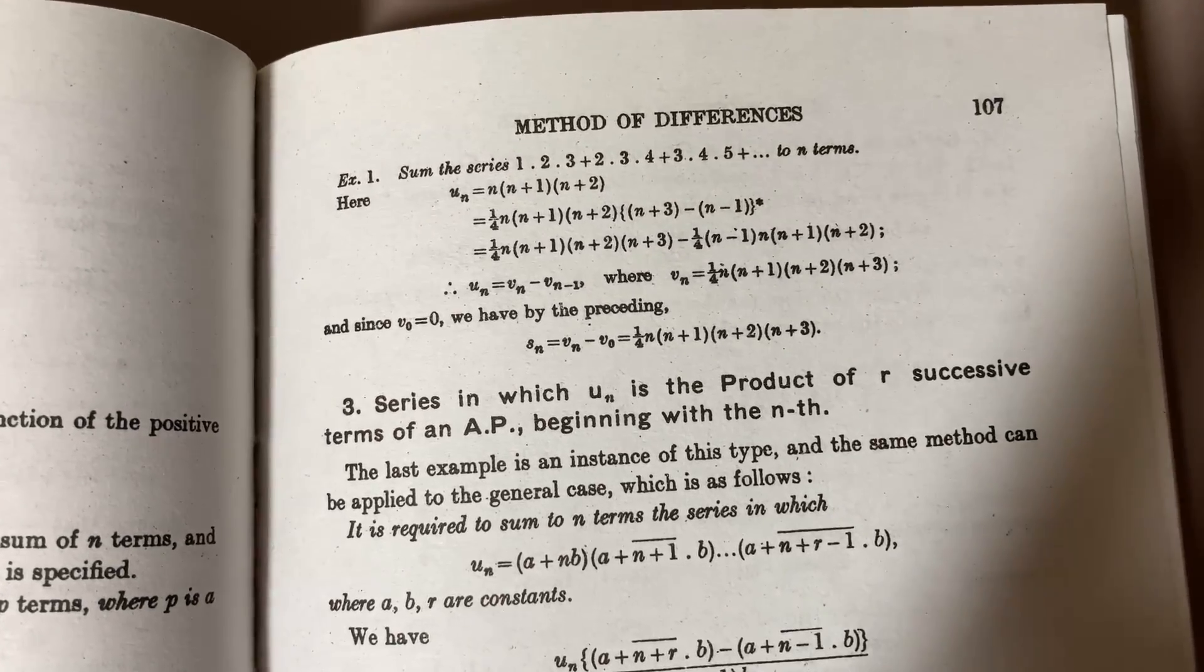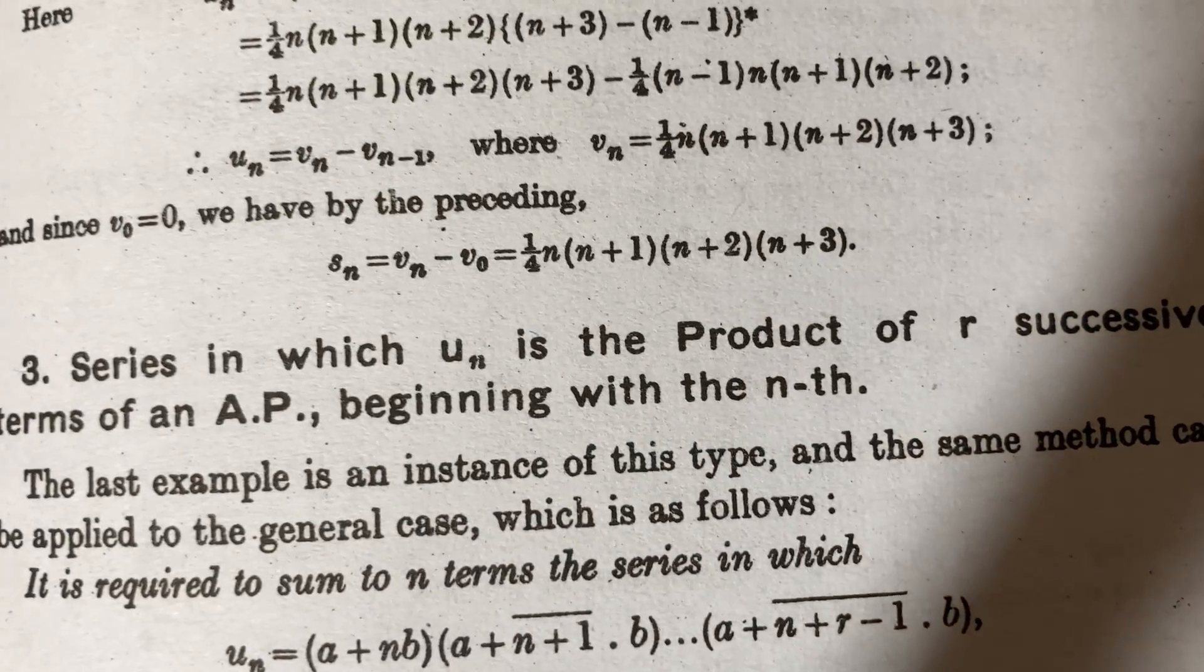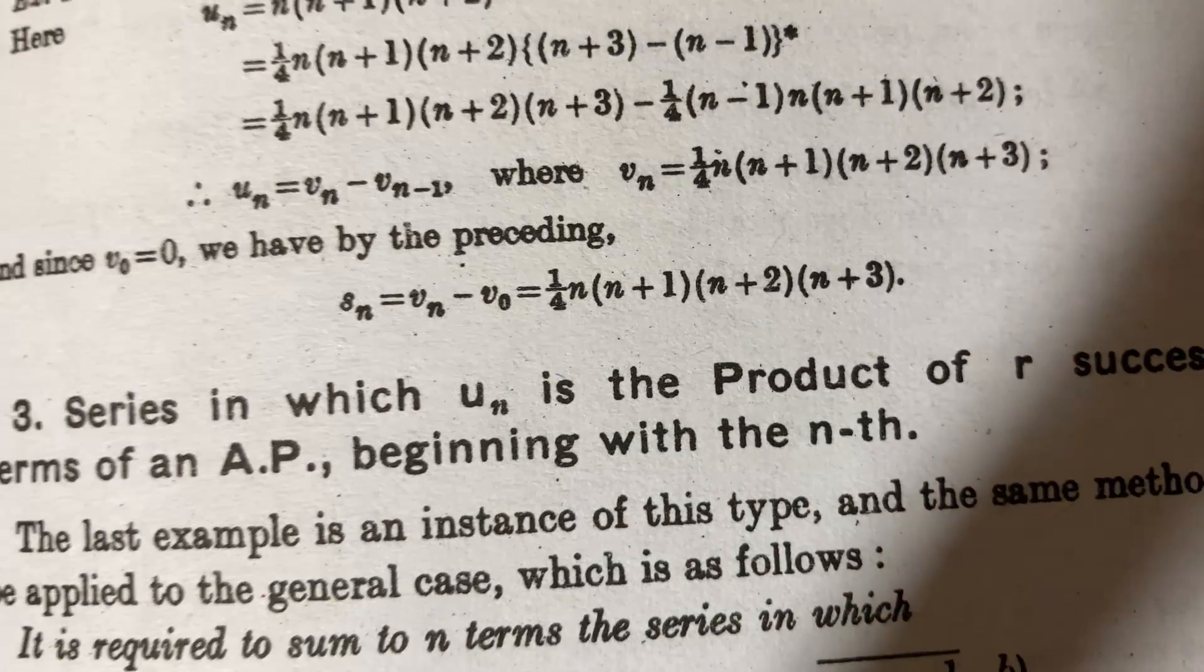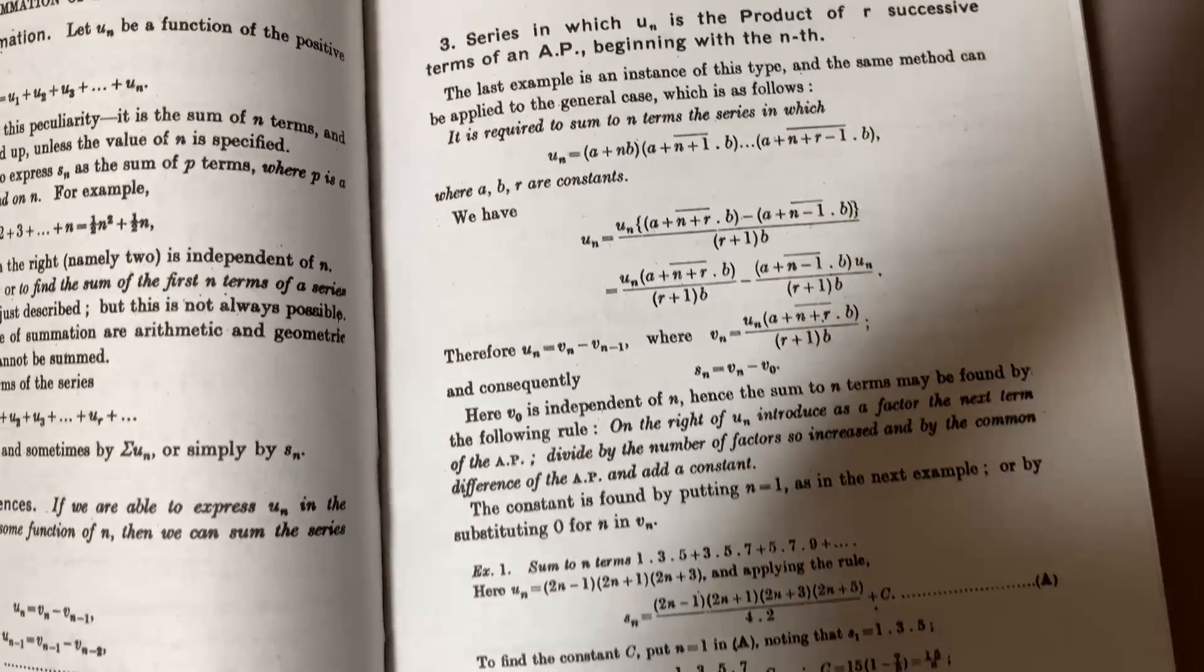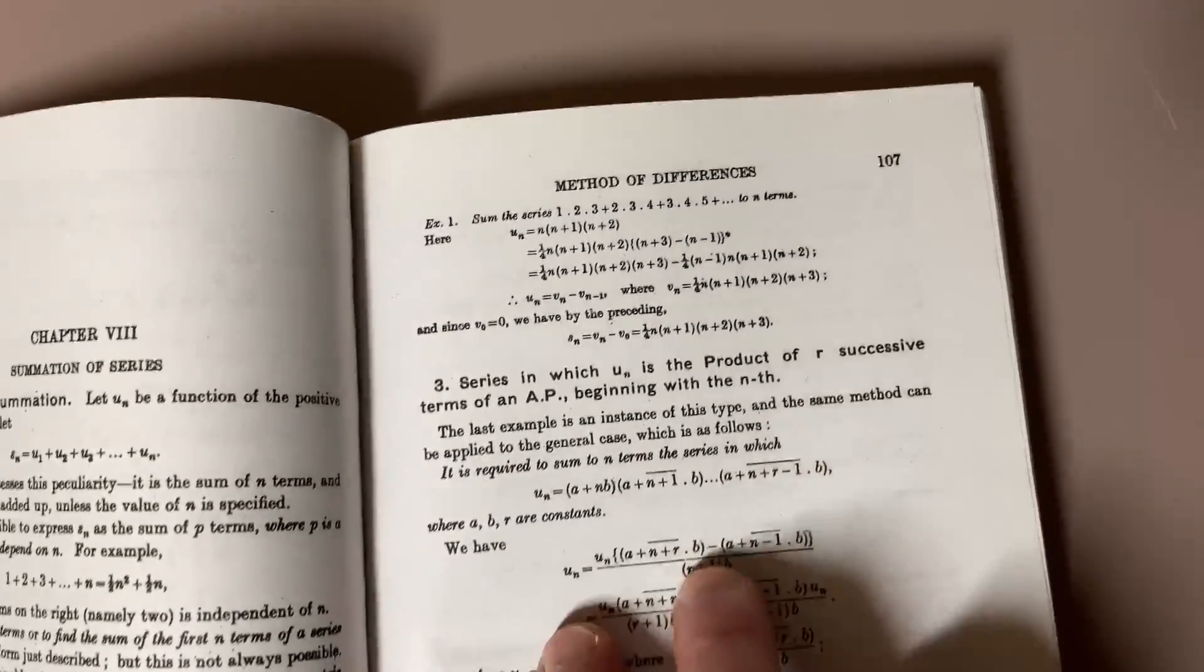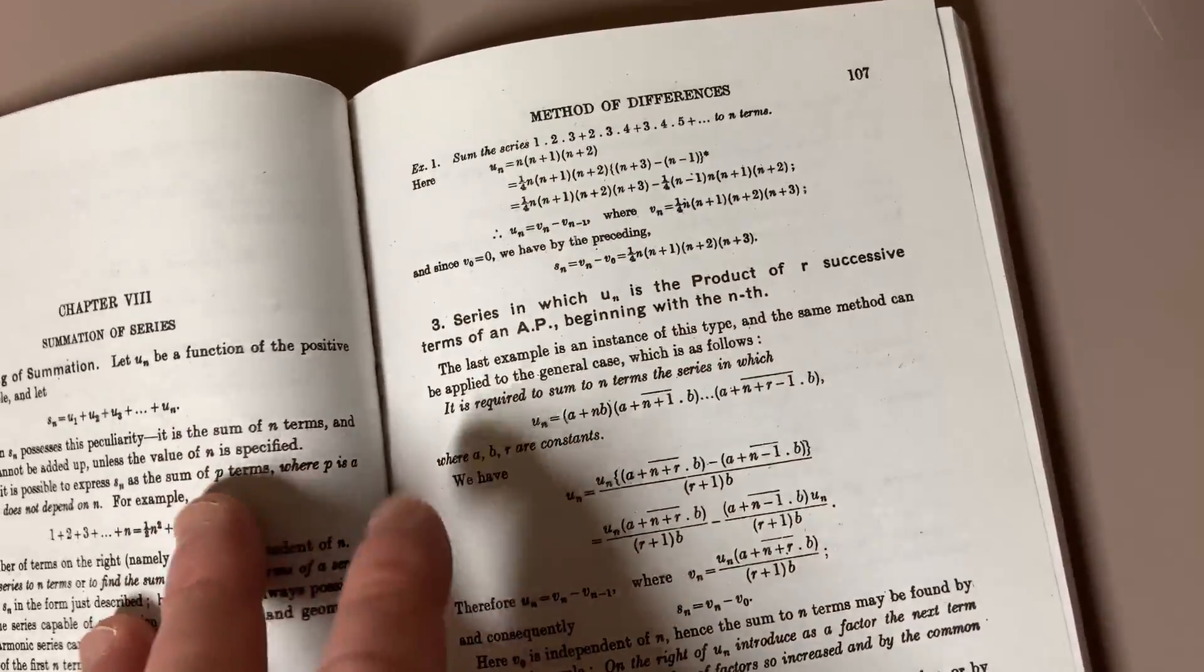One con of this book is that I feel that the text is a little bit small. For example, here we have S sub n equals V sub n minus V naught equals 1 fourth n. That's pretty small and kind of hard to read. It would be nice if it was a little bit larger. But these are reprints, and I don't know how that process works, but I'm assuming they just take the old book and copy it.